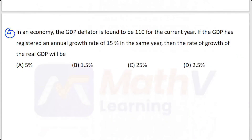In an economy, the GDP deflator is found to be 110 for the current year. If the GDP has registered an annual growth rate of 15% in the same year, then the rate of growth of real GDP will be: 5%, 1.5%, 25%, or 2.5%? The answer is 5%.